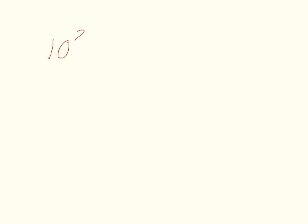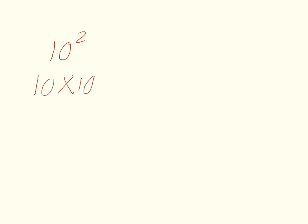Before we start this lesson, we're going to talk about squared units of measure. So if we were looking at something as basic as 10 squared, what that is actually telling us is that we need to multiply this twice. So what 10 squared actually is, is 10 times 10, which is equal to 100. So 10 squared is actually 100. You can do that with any number.